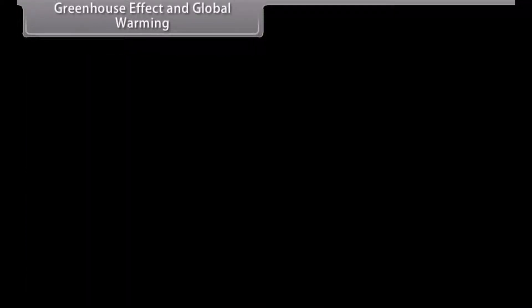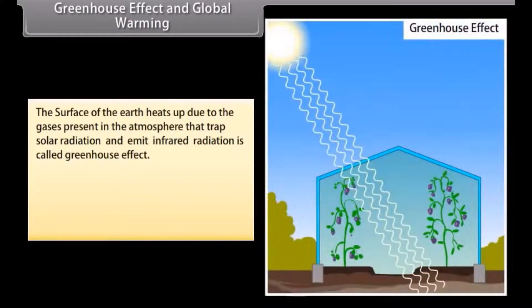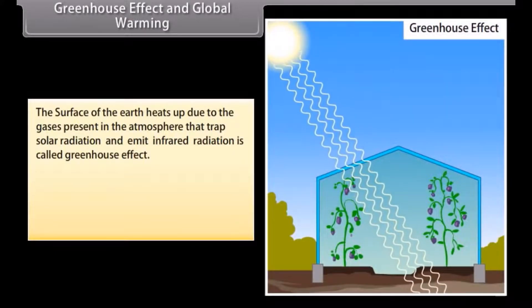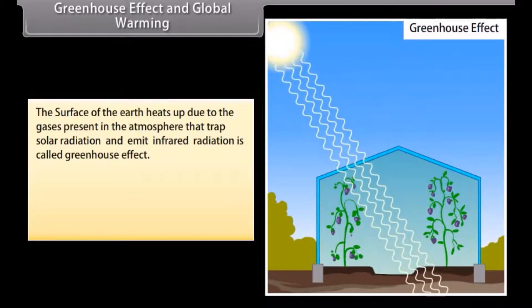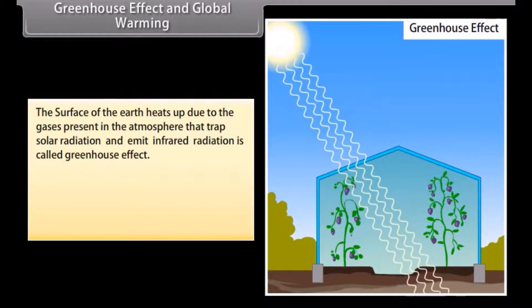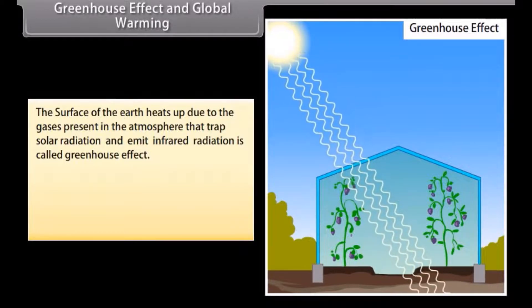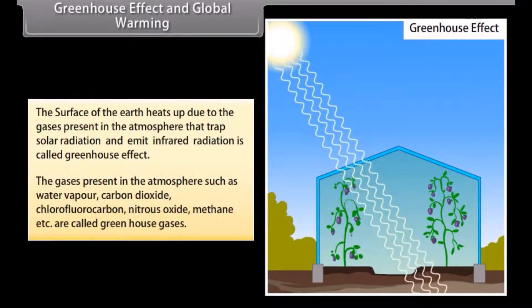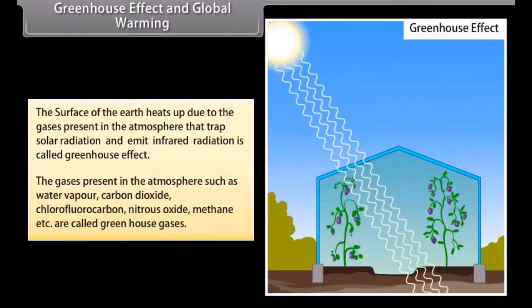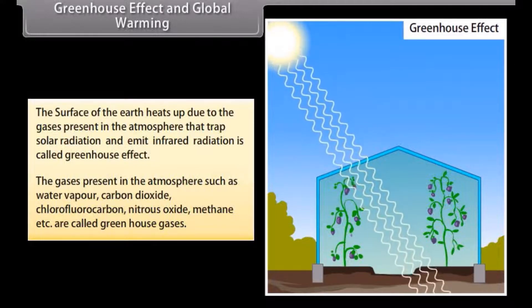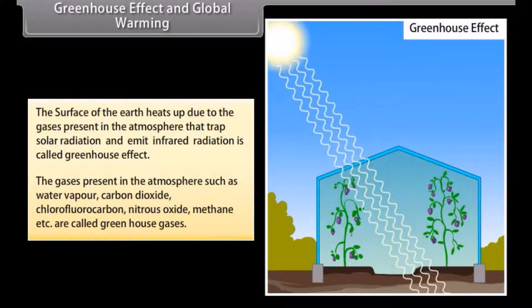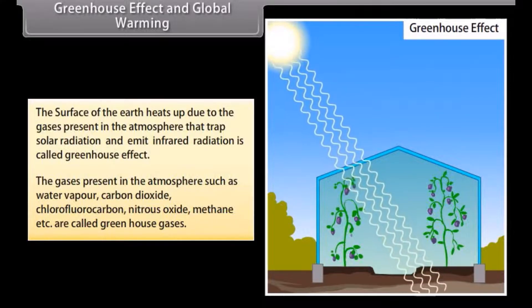Greenhouse effect: the surface of the earth heats up due to gases present in the atmosphere that trap solar radiation and emit infrared radiation — this is called the greenhouse effect. The gases present in the atmosphere such as water vapour, carbon dioxide, chlorofluorocarbon, nitrous oxide, and methane are called greenhouse gases.